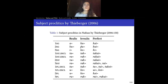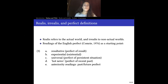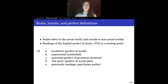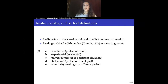Before we dive into the actual data and my analysis, let's first define what realis, irrealis, and perfect are as categories. I consider realis to be a modal category that refers to the actual world — something that usually has present and past reference because it is observed in actuality. Irrealis is a modal category that refers to non-actual worlds or things that can be hypothesized to happen in the future, or any possibilities that might happen in the future, or could be happening, or could have happened — such as the counterfactual example I mentioned in the beginning.